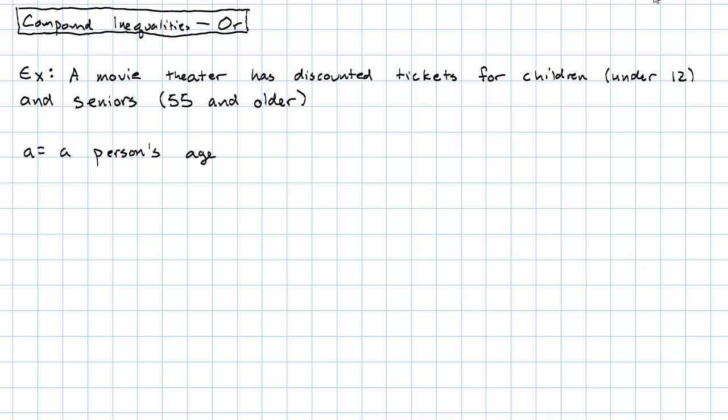For example, suppose a movie theater has discounted tickets for children under 12 and seniors 55 and older. Then if a represents a person's age, someone can use a discounted ticket if a is less than 12, under 12, or a is greater than or equal to 55, 55 and older.